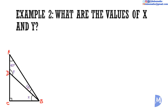All the angles in a triangle add up to 180 degrees. So, 40 degrees plus 15 degrees plus Y degrees is equal to 180 degrees. Thus, angle Y is equal to 180 minus 40 minus 15. Angle Y is equal to 125 degrees.